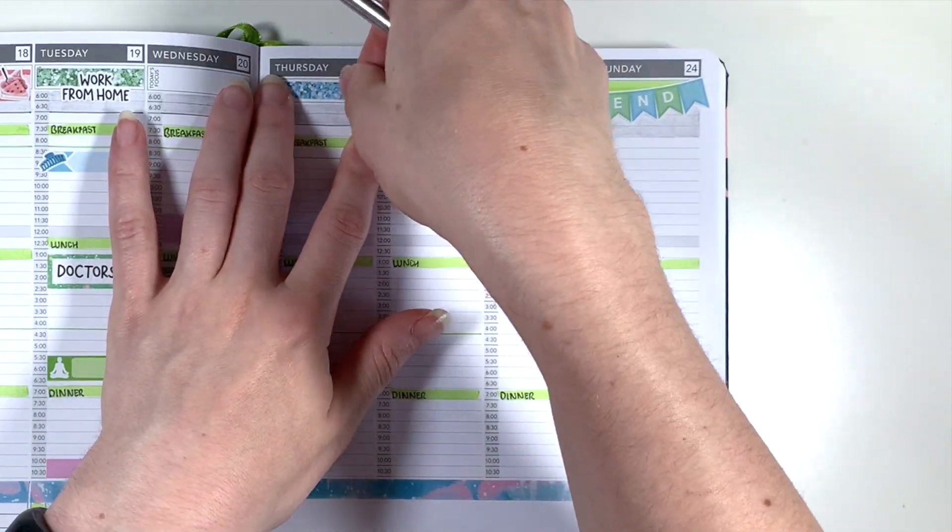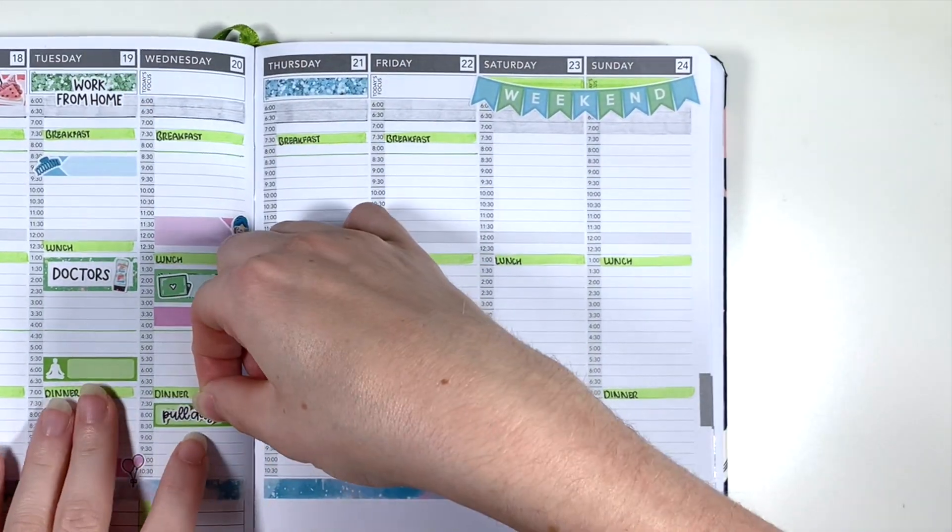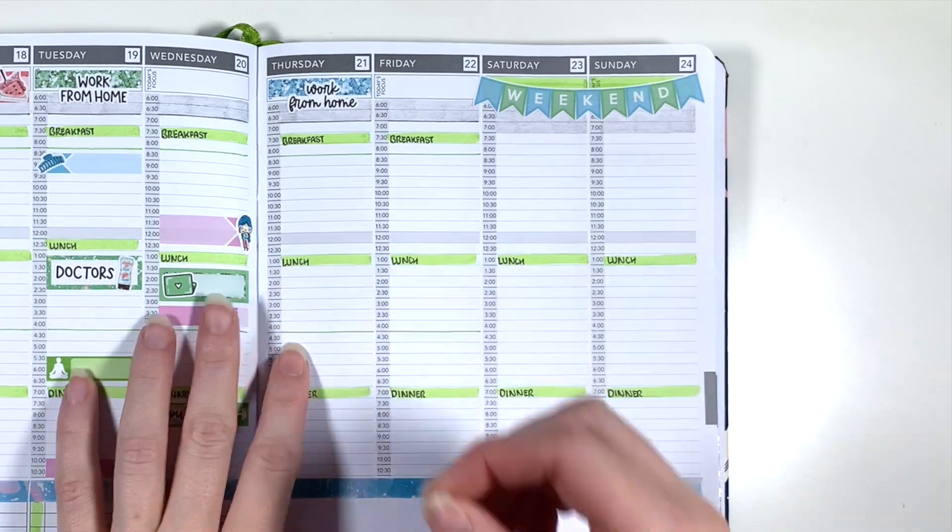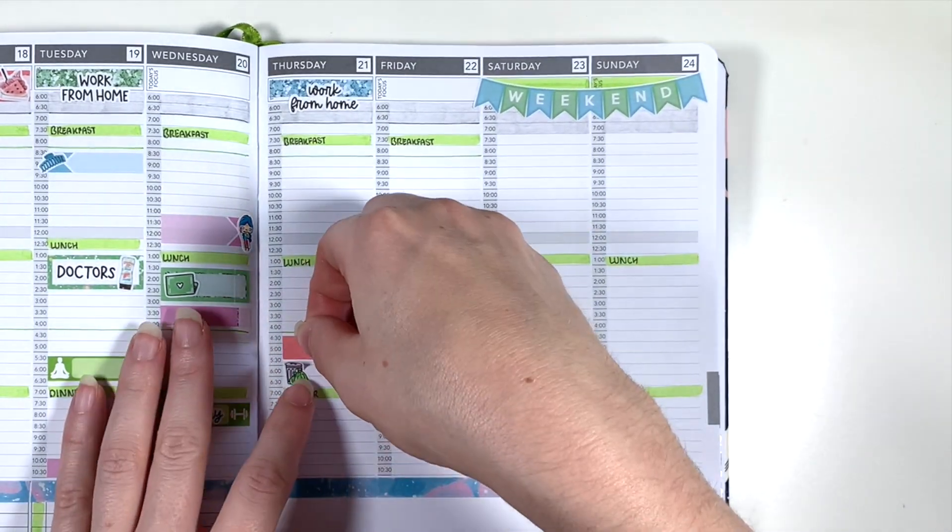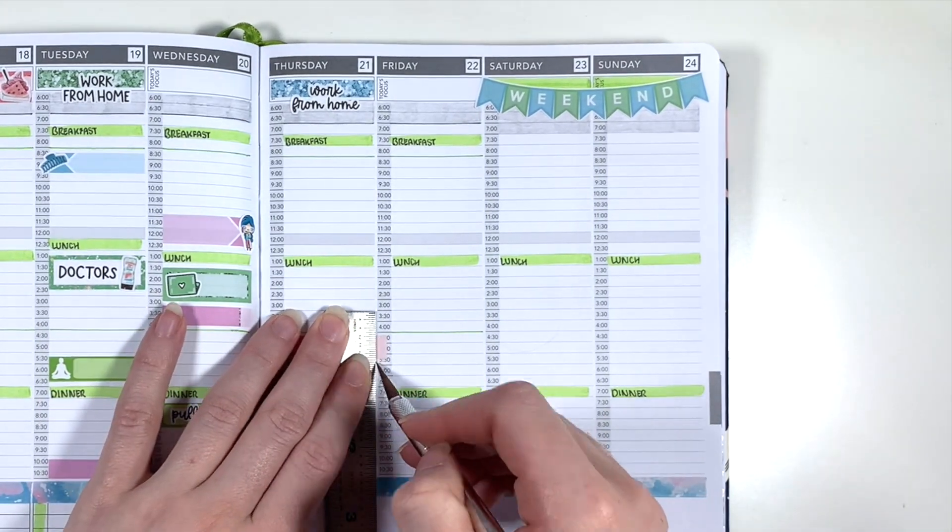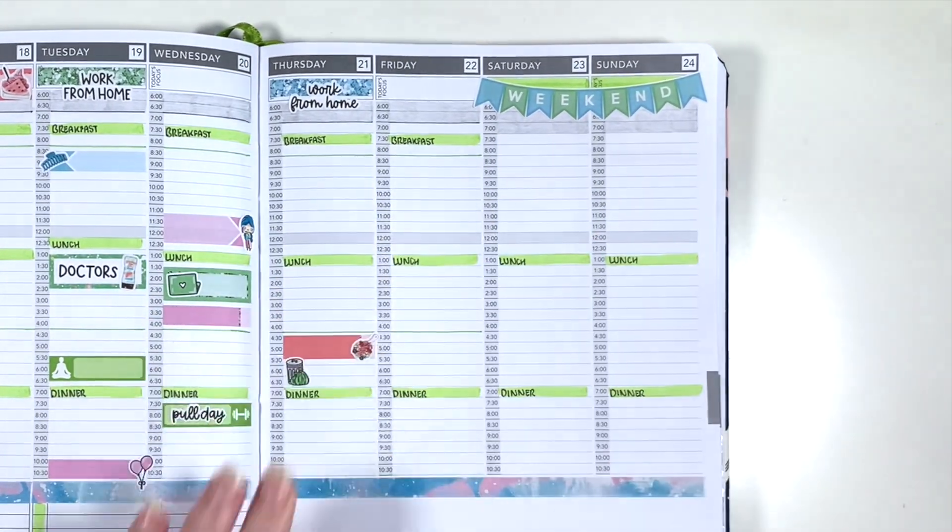So moving over to Thursday I'm first using a glitter header and a work from home script to mark that I was again working from home this day. And then I'm using a bin icon from a planner face multi-color doodle sheet to mark in a reminder to take the bins out and then using one of the little things with some deco and a payday script from planner face to mark in that this day it was payday.